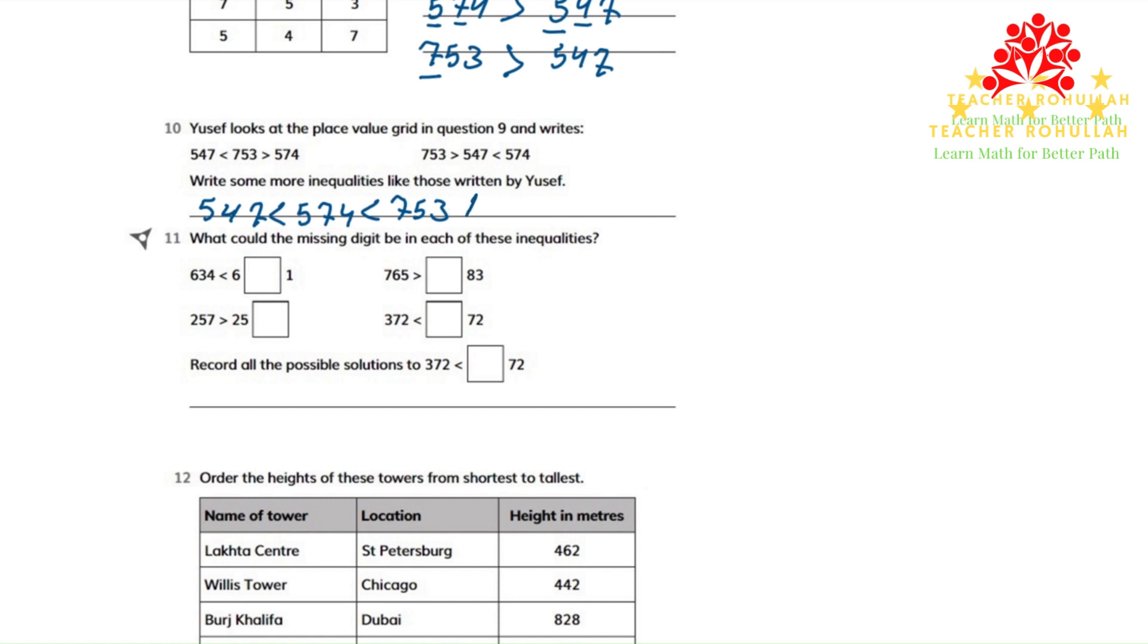The other one that we can make is 753 is greater than 574, and 574 is greater than 547.